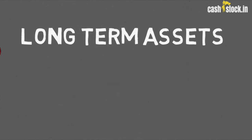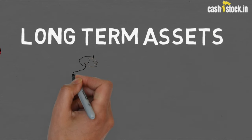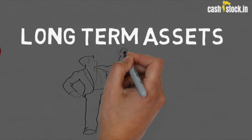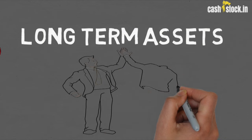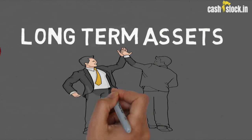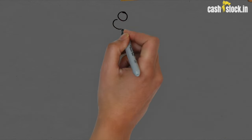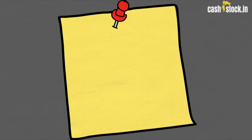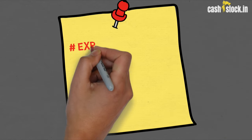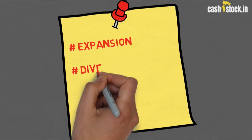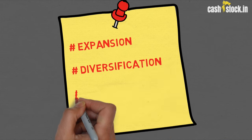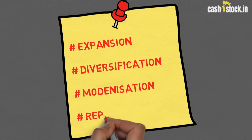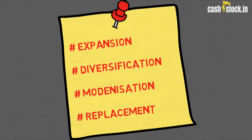You should also remember that the capital budgeting decision involves investment in long-term assets in anticipation of the expected flow of benefits in the coming future. The firm's investment decisions would generally include expansion, acquisition, modernization, and replacement of long-term assets.